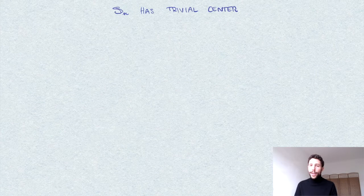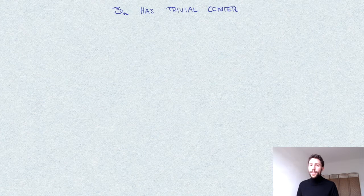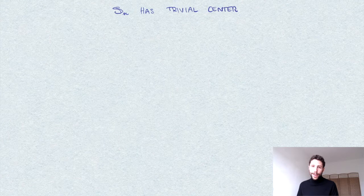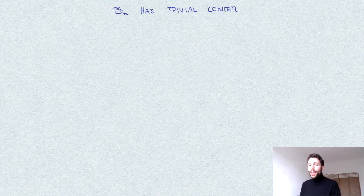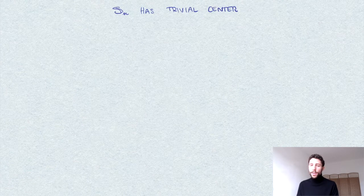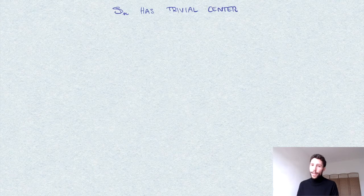I want to give a proof of a very simple fact, namely that the symmetric group Sn on n letters, at least for n at least three, has a trivial center. In other words, there are no elements in Sn, in the symmetric group, that commute with any other element.